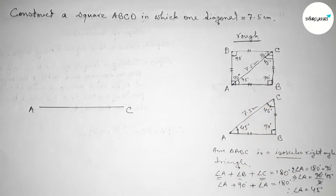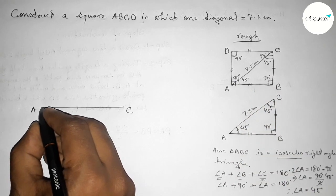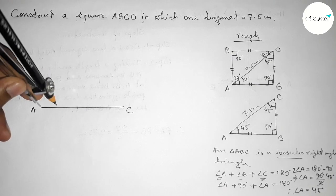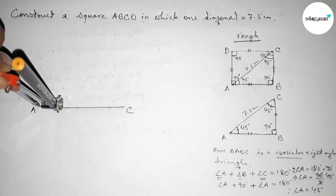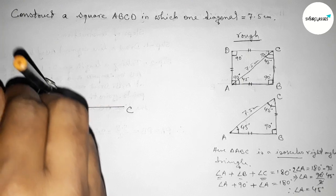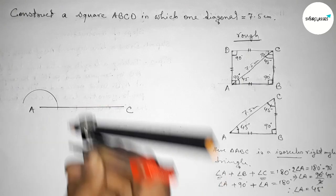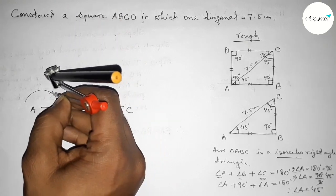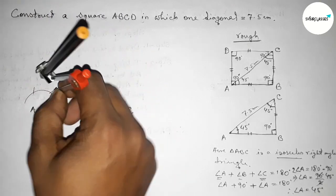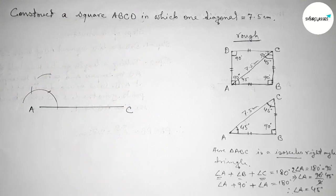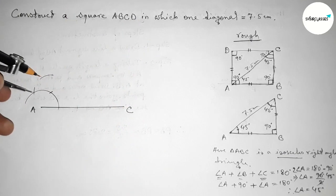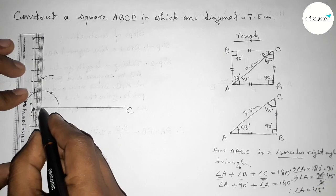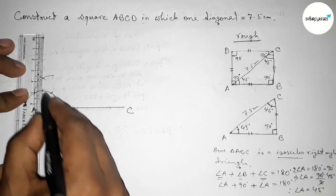Now we have to draw a 45-degree angle at point A using a compass. First, taking any length and drawing an arc. Then putting the compass at the intersection points and cutting arcs with the same length to construct a 90-degree angle by joining the points.